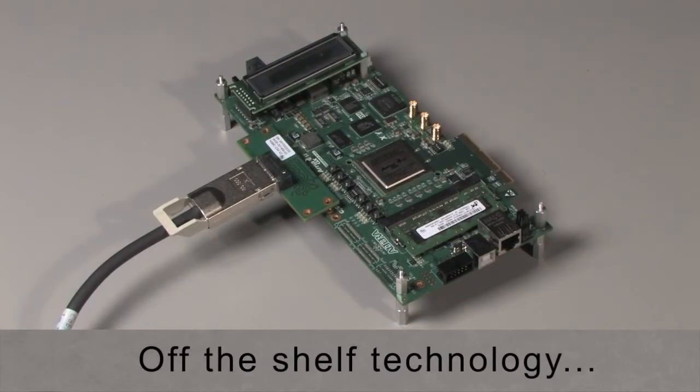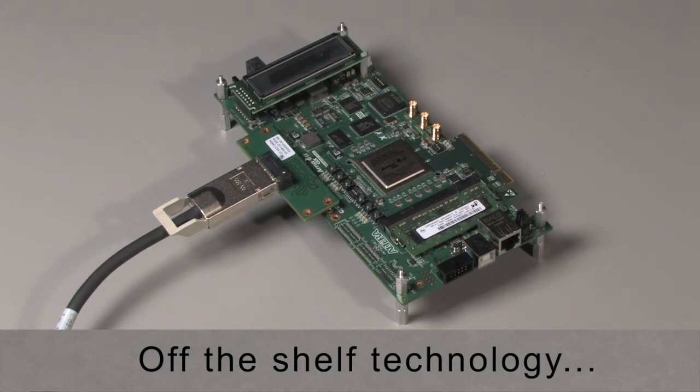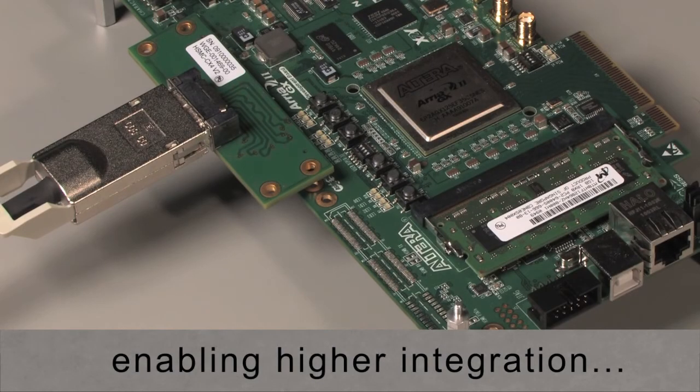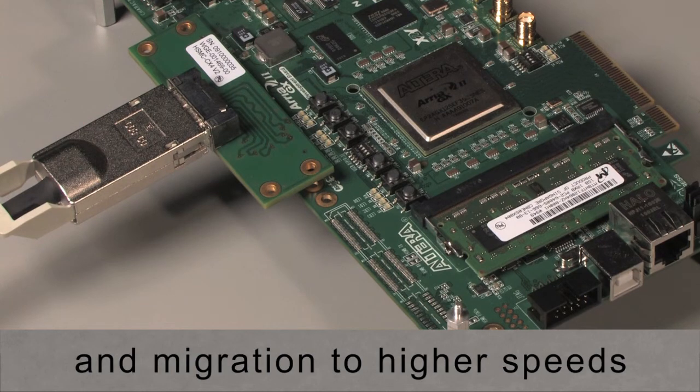CameraLink HS is designed around off-the-shelf components from multiple vendors. The technology used in the protocol is 8B10B and this is being invested in heavily by the FPGA vendors.